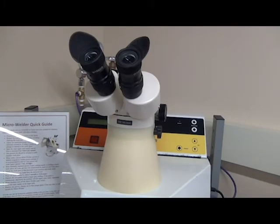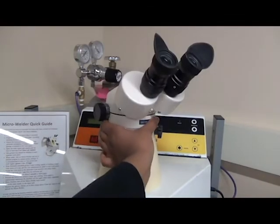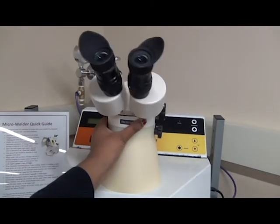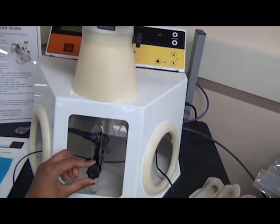After terminating power settings, adjust the stereo microscope and the tungsten electrode. This nozzle on the side can be used to adjust the stereo microscope. This knob can be used to adjust the tungsten electrode.